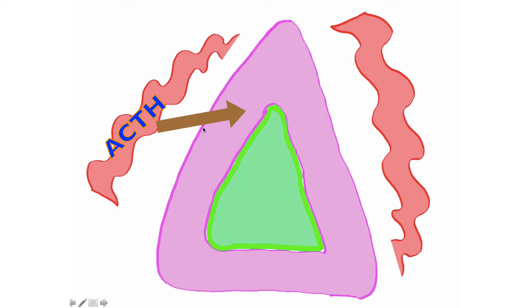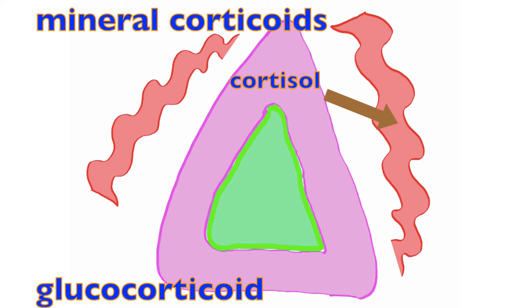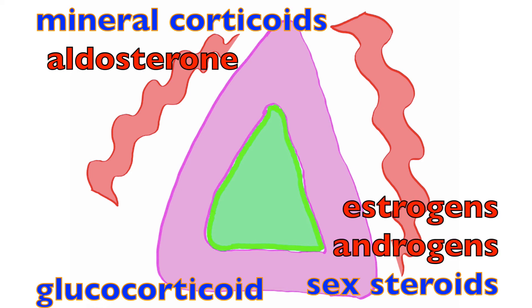Upon arrival of ACTH to the adrenal cortex, cortisol is released into the blood. Cortisol is a type of glucocorticoid that is synthesized and released from the adrenal cortex. The adrenal cortex is also involved with mineralocorticoids, such as aldosterone, which regulates sodium levels in the blood, and the sex steroids, androgens, and estrogens.